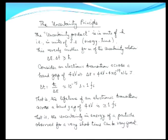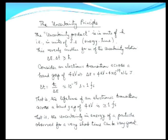Recall that the uncertainty principle is the product of Δx and Δp, which is greater than or equal to Planck's constant, whose units are energy multiplied by time — joule·second. This suggests another form of the uncertainty relationship: ΔE · ΔT ≥ h, where ΔE represents joules and ΔT represents seconds, together forming the units for Planck's constant.